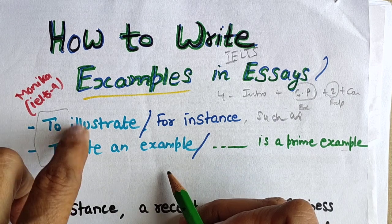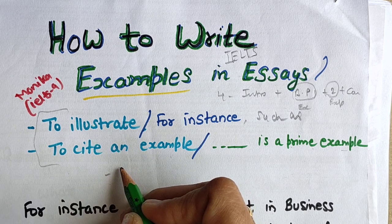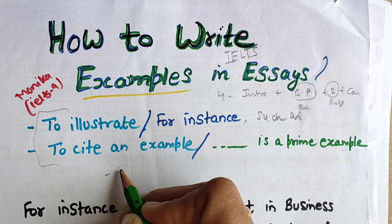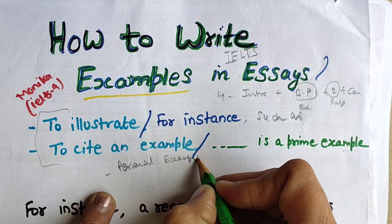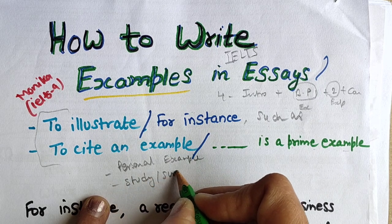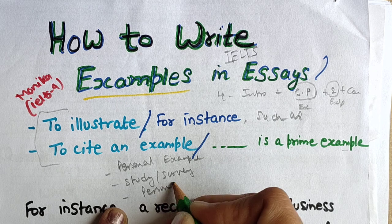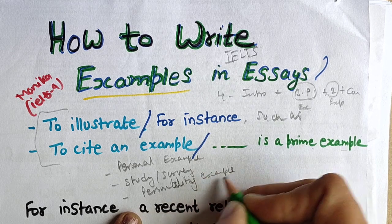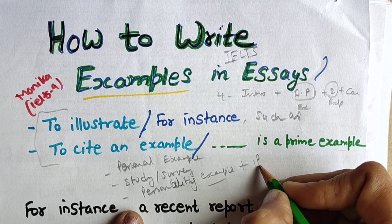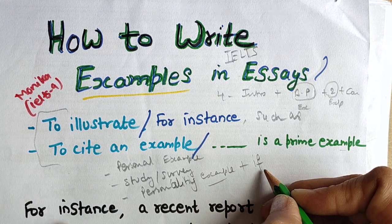The important point is: what kind of examples do we need to give? Some people are confused — they ask whether we always need to put a survey or study kind of thing, or whether we can use a personal example. The types are: personal example, study or survey, famous personality or celebrity example, and conditional sentences using 'if' for explaining your point of view.